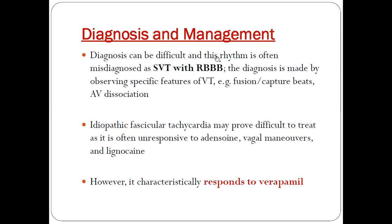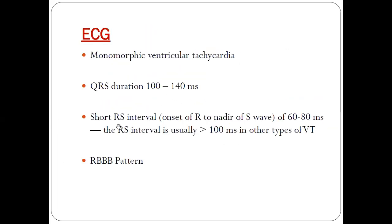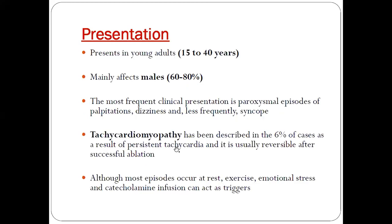Diagnosis can be difficult and this rhythm is often misdiagnosed as SVT with RBBB. Diagnosis is made by observing specific features of VT such as fusion beats, capture beats, or AV dissociation. Idiopathic fascicular VT may prove difficult to treat as it is often unresponsive to adenosine, vagal maneuvers, and lidocaine. However, it characteristically responds to verapamil. You can see here the presence of capture beats and fusion beats, which favor ventricular tachycardia. It is a narrow complex VT with a short RS interval.